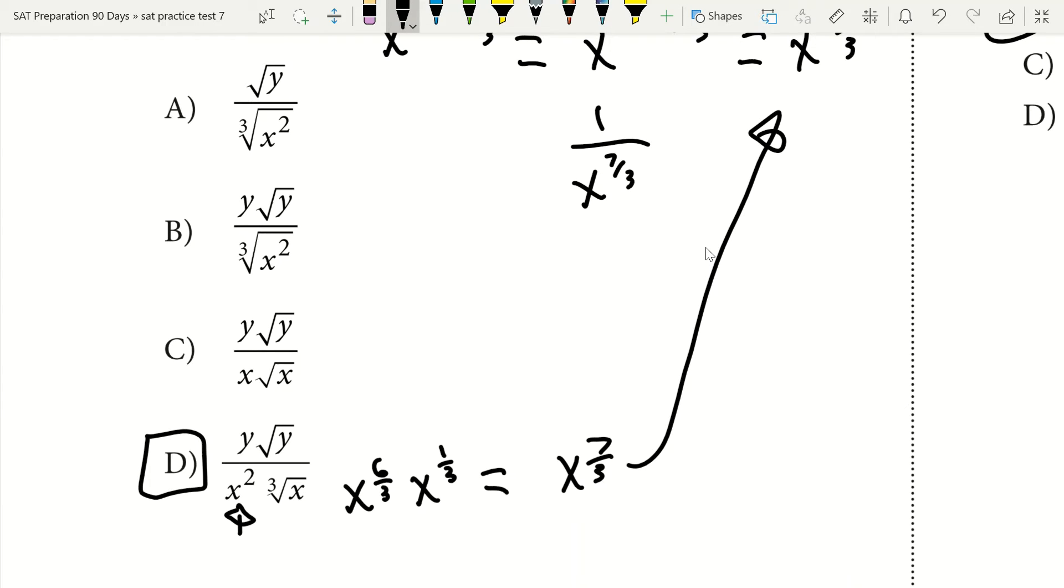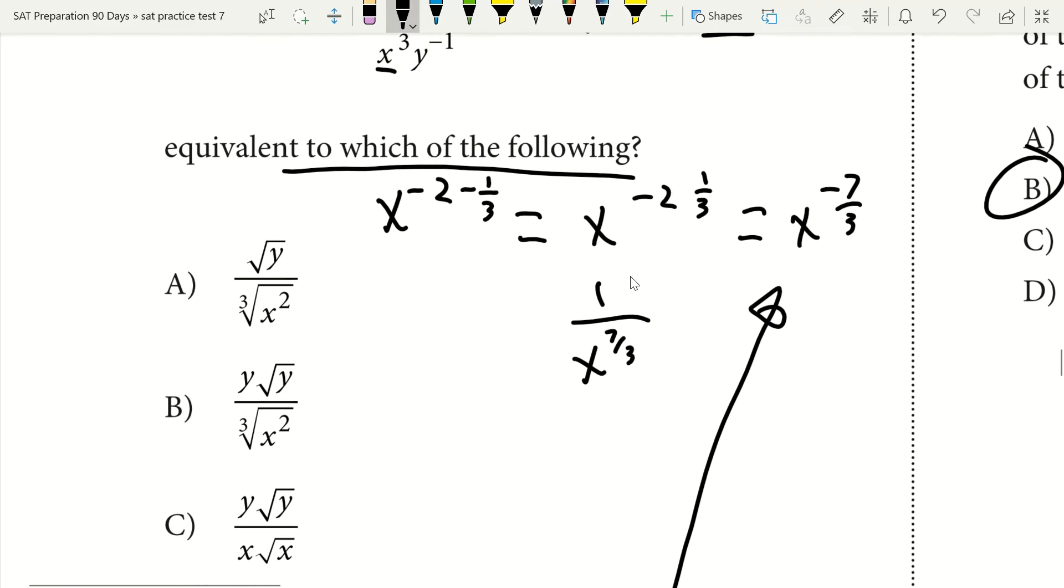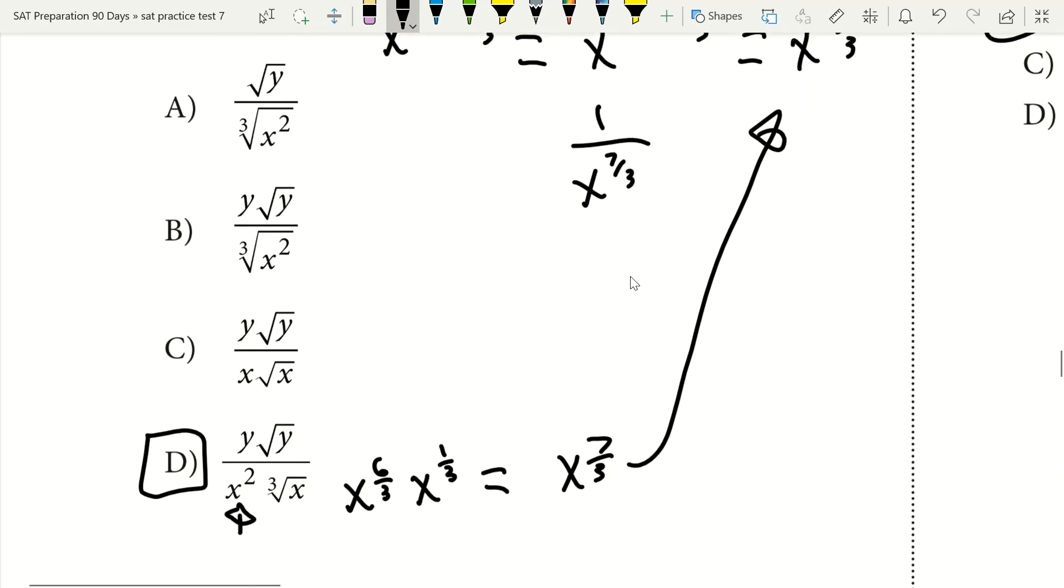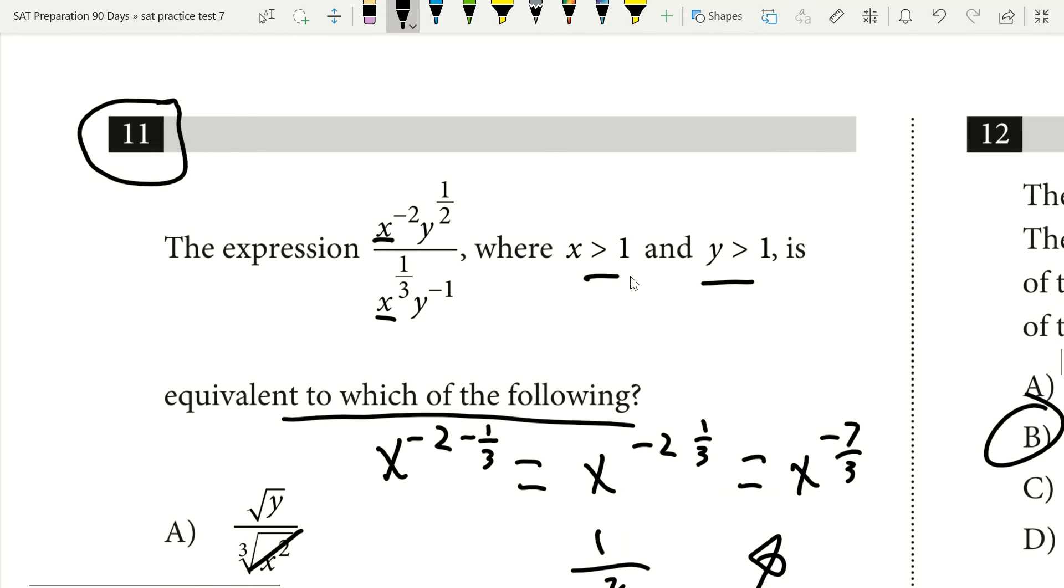Now we can go ahead and do y just for practice, although we would not need to solve for y in this situation because we know that x is correct. So we wouldn't even have to solve for y if we were taking this as a real SAT unless we just want to check our work. But just based on x, we know d is the correct answer because if we look at our denominators in a, b, and c, none of them have x to the seventh-third in the denominator, so d would have to be our answer.